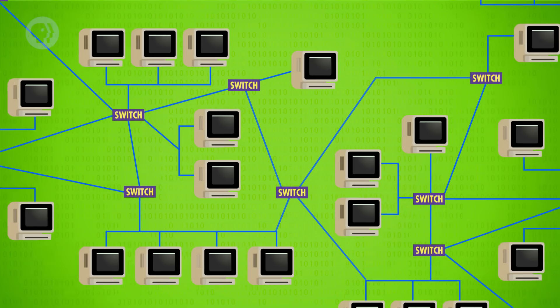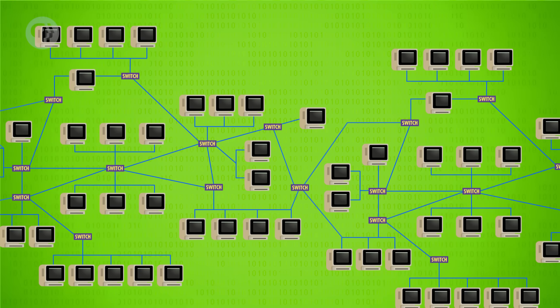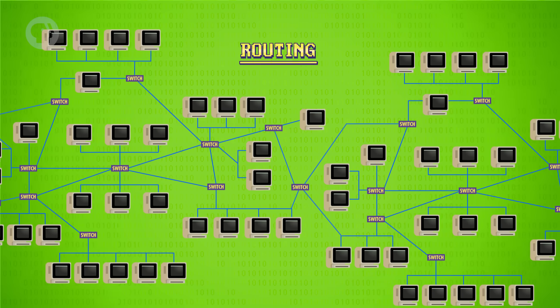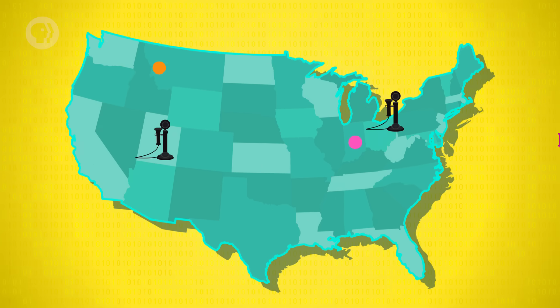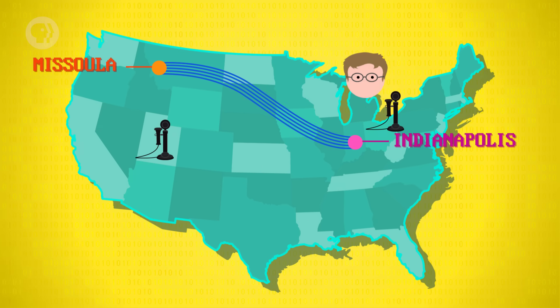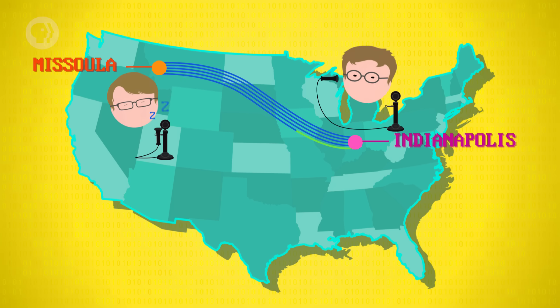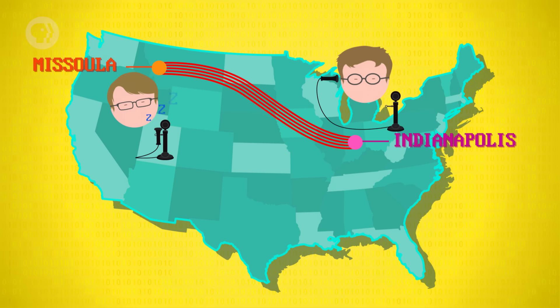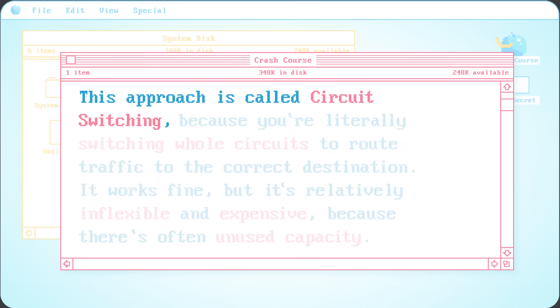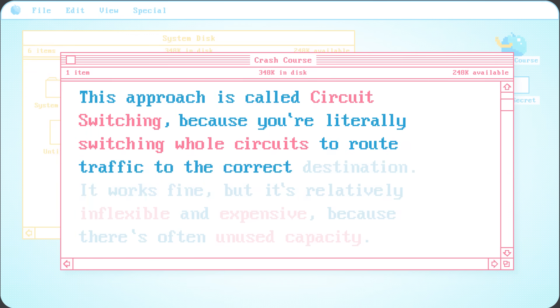What's interesting about these big networks is that there's often multiple paths to get data from one location to another, and this brings us to another fundamental networking topic: routing. The simplest way to connect two distant computers or networks is by allocating a communication line for their exclusive use. This is how early telephone systems worked. For example, there might be five telephone lines running between Indianapolis and Missoula. If John picked up the phone wanting to call Hank in the 1910s, John would tell a human operator where he wanted to call, and they'd physically connect John's phone line into an unused line running to Missoula. For the length of that call, that line was occupied, and if all five lines were already in use, John would have to wait for one to become free. This approach is called circuit switching.